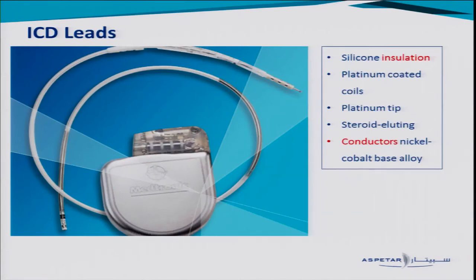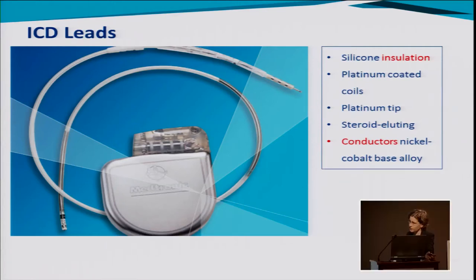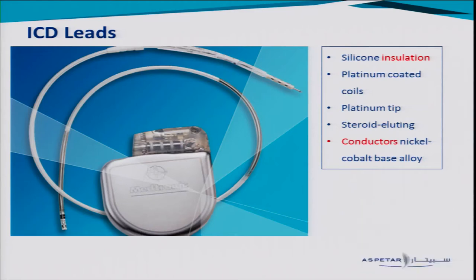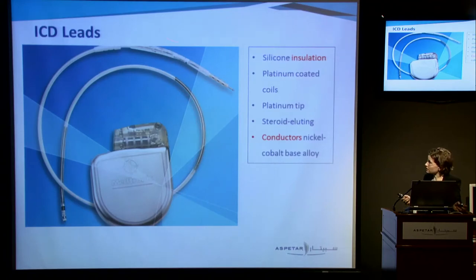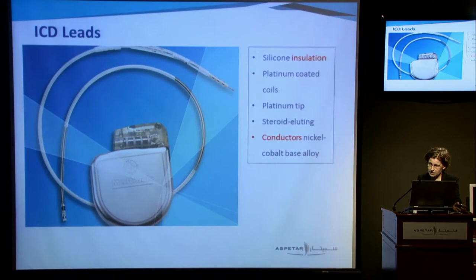It's not just a device — there's a lead as well, and really the lead is the Achilles heel of the whole system. If the device is going to fail, it's usually the lead that's the problem. It has silicone insulation and platinum-coated coils, and these coils are the places on the lead where the shock is delivered. You can have one coil distally in the right ventricle, or two coils where the more proximal coil sits in the superior vena cava. The conductors run down the middle of the lead and deliver the pacing impulses.